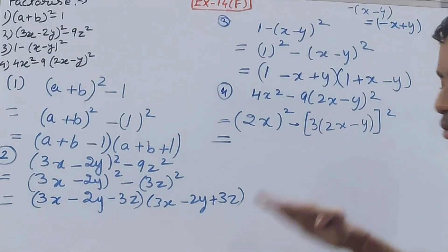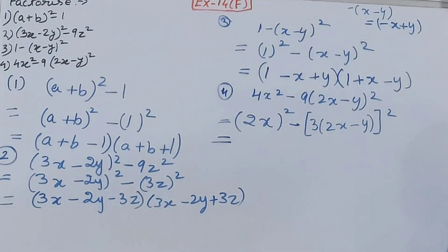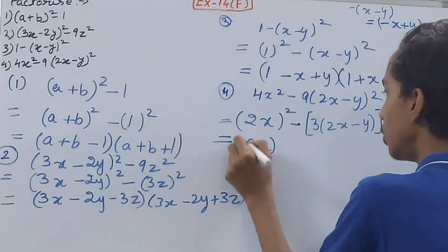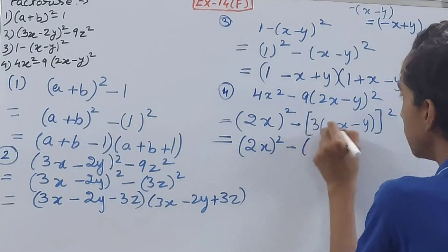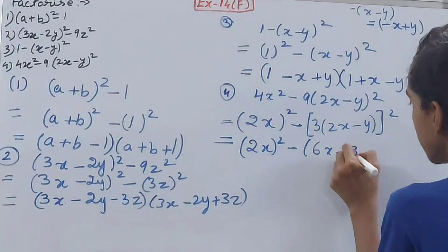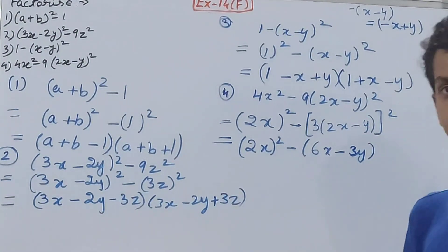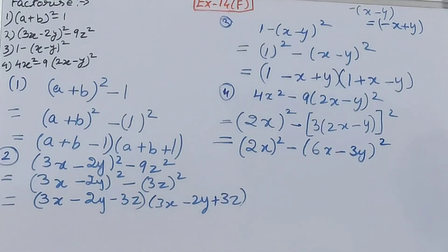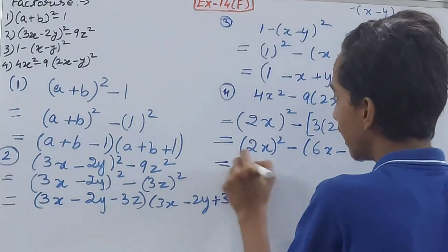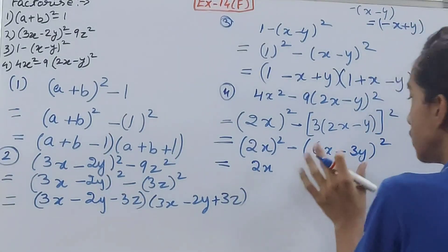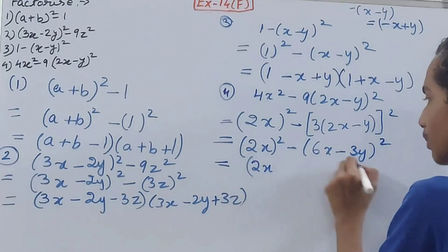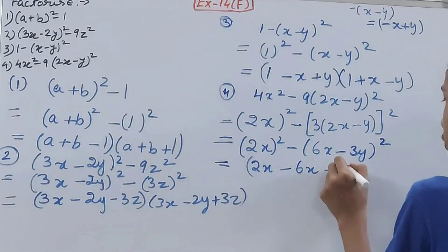Now it is in a² - b² form. Before applying the identity, simplify: 3 × 2x = 6x and 3 × (-y) = -3y, so (3(2x - y))² becomes (6x - 3y)². Applying the identity, the first bracket (a - b) gives 2x - 6x + 3y = -4x + 3y, since the signs of b's terms change when subtracted.